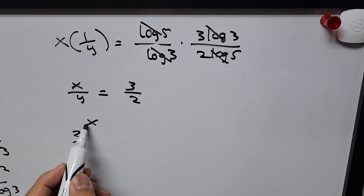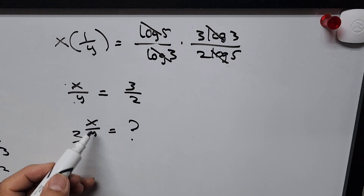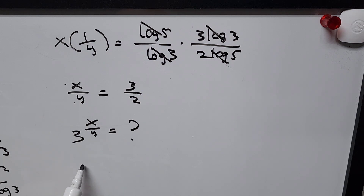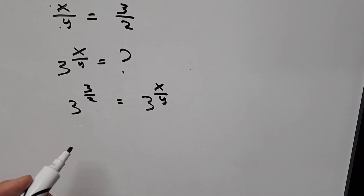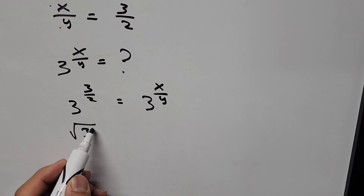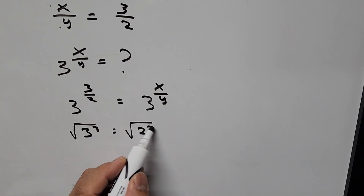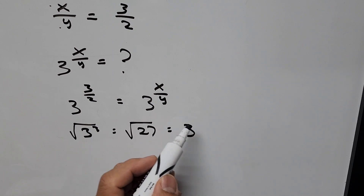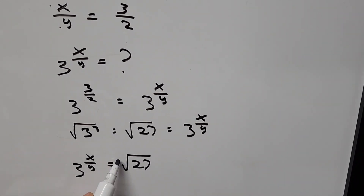We have the value of x divided by y, so plugging it in: 3 to the power of x divided by y equals 3 to the power of 3 halves. The left hand side can be written as the square root of 3 cubed, which is the square root of 27. Therefore, 3 to the power of x divided by y equals plus or minus the square root of 27, which is our final answer.